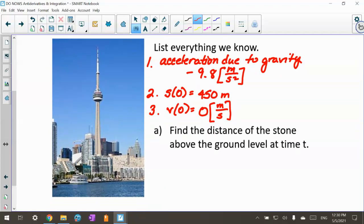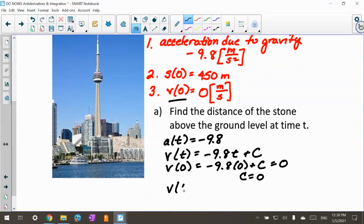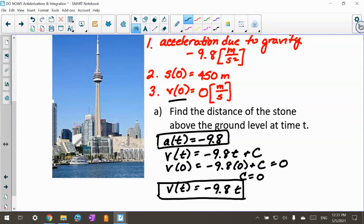Now they want us to find the distance of the stone above the ground level at time t. We know a(t) equals negative 9.8 meters per second squared. Now we're going to go backwards and find velocity. Our velocity at time t, we're going to do an antiderivative, is negative 9.8t plus c. Because we know v(0) is 0, we plug that in: negative 9.8 times 0 plus c equals 0, so c is 0. Our velocity equation is just negative 9.8t, which makes sense because you're just dropping it and letting acceleration due to gravity pull it down.